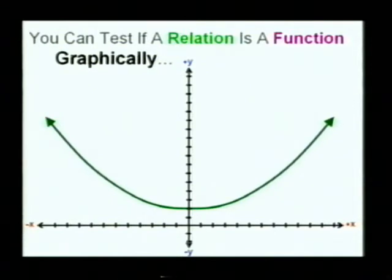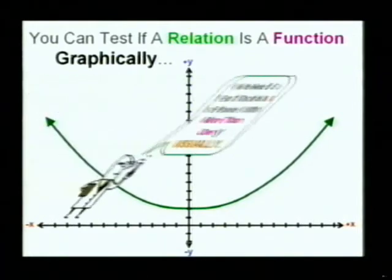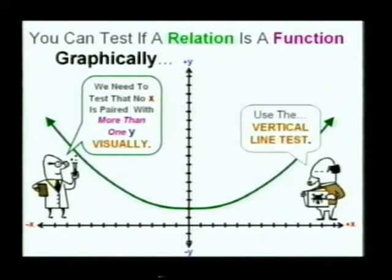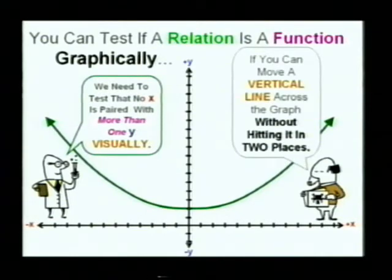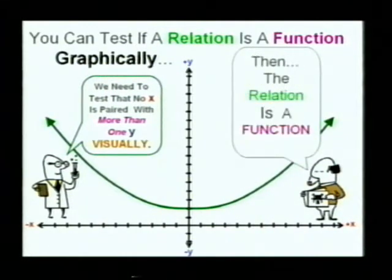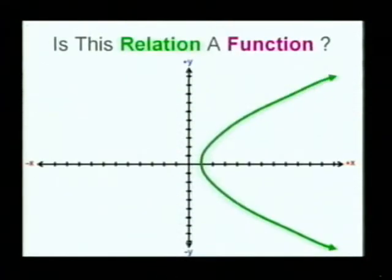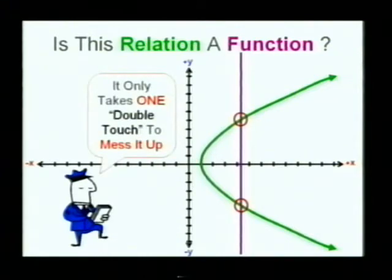We can test whether a relation is a function graphically. We have to make sure that every x only gets one y visually. Basically, that means we run the vertical line test — see if a vertical line moving from left to right ever crosses our graph more than once. Because if it does, we don't have a function. In this first example, it is a function because it never crossed in more than one spot, so it gets the function seal of approval. In the second example, a vertical line crosses in more than one place, so while it is a relation, it is not a function.